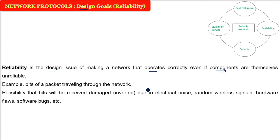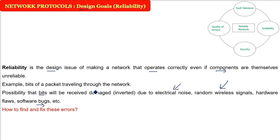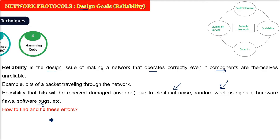There are various reasons for data errors: electrical noise, random wireless signals, hardware flaws or failures, and even software can remove or change a bit. So how do we find these problems and try to recover from or fix them?